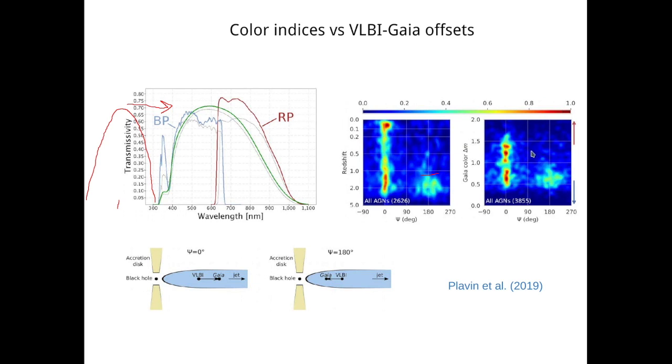Similar situation is observed for Gaia colors. Gaia has two bandpasses, the blue one and the red one. When we calculate the difference of magnitudes between the two bandpasses for the sources, we see that the downstream offsets occur in sources of any color. This presumably happens because the emission of a jet can have any color from infrared to ultraviolet, because it depends on the synchrotron peak position, while the upstream offsets happen only in blue sources.